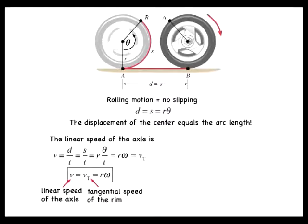Now what if the car is accelerating? The linear acceleration a of the axle, which is the acceleration of the car, is a equals delta v divided by delta t. With v equal r times omega, this becomes a equals r times delta omega divided by delta t.